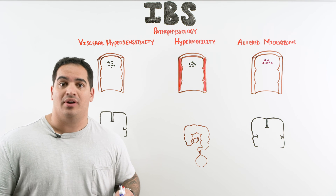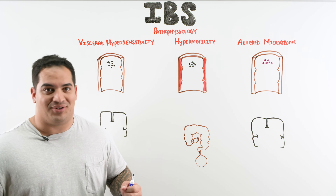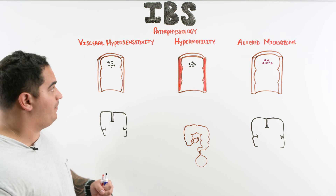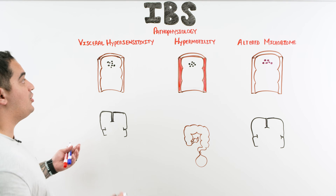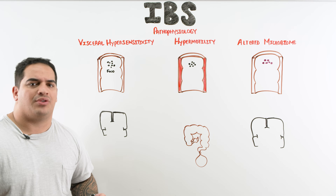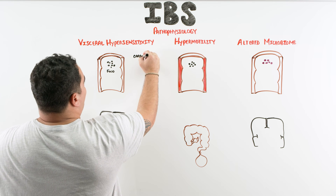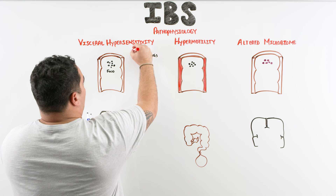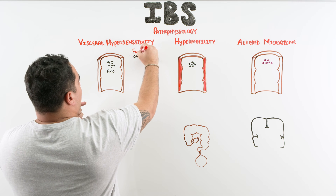IBS is really one of those diseases where it's not truly well understood, but we should have a little bit of understanding of the pathophysiology even though it's not concrete. There are three pathophysiological concepts that IBS has been supposedly linked to. The first is visceral hypersensitivity. Usually patients have some type of food that they have ingested, and these foods are commonly linked to carbohydrates — things like oligosaccharides and disaccharides — as a potential trigger.